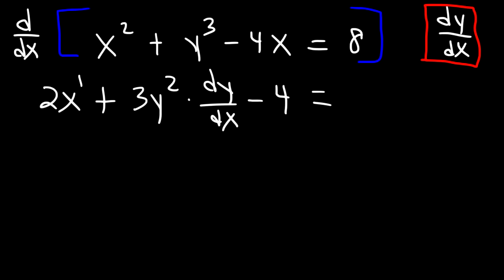For those of you who need to refresh on the basic rules of derivatives, I'm going to post a few links in the description section of this video. You'll have more resources that will help you find derivatives like power rule, product rule, quotient rule, and stuff like that. Now what is the derivative of a constant like 8? The derivative of any constant is always 0.